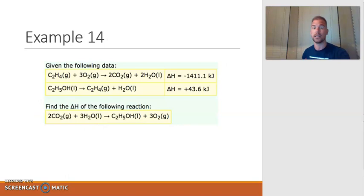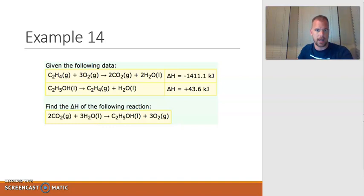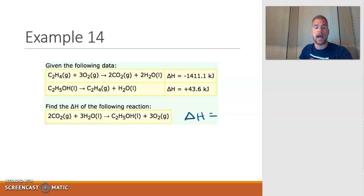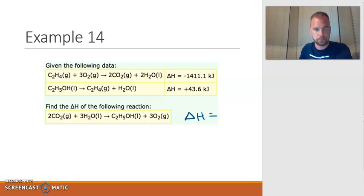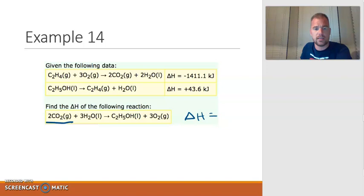Let's look at some examples. Given the following data — two chemical equations with resulting enthalpies — find the delta H of the following reaction. I want these two reactions to add together to give me this target reaction, because then I can add their enthalpies to get the delta H. But we need to make sure first that these two reactions actually do add together to give us this. This is the reaction we're trying to solve for, so I need to make sure there are two carbon dioxides on the reactant side — because that's how they appear in the target reaction.